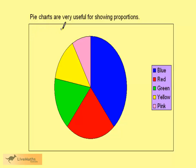Pie charts are very useful diagrams for showing proportions. We can see a pie chart is formed by slicing up a circle. Just a quick impression of this one shows us that the blue is the largest proportion, and that pink is the smallest. So an immediate visual impression is gained by displaying data on a pie chart.